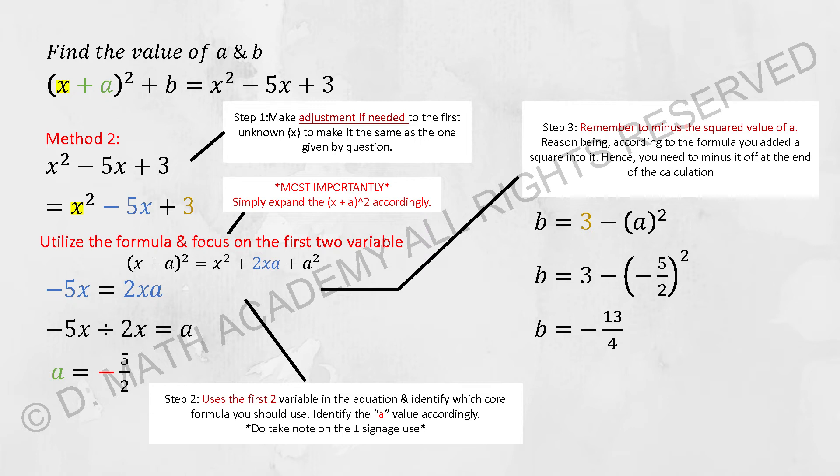So b is actually 3, which is the integer that was left over earlier, minus the a² that we added in. So your b's result will be -13/4.